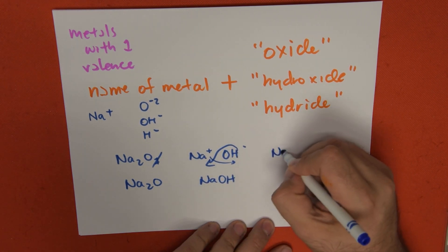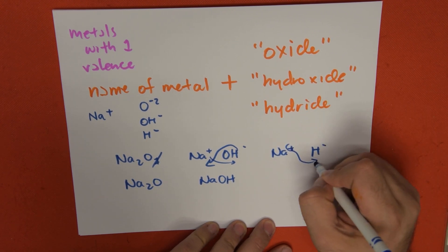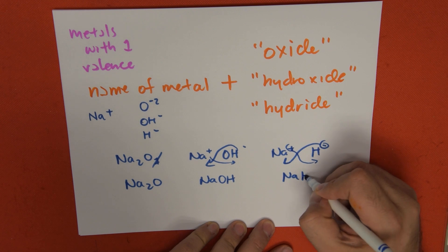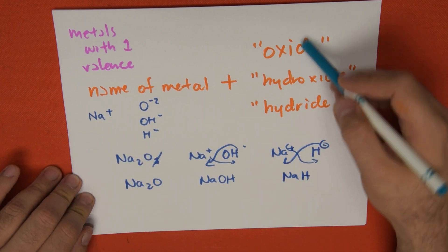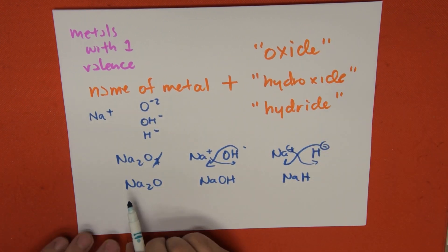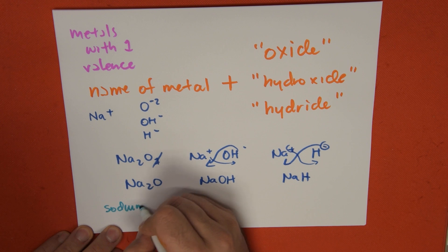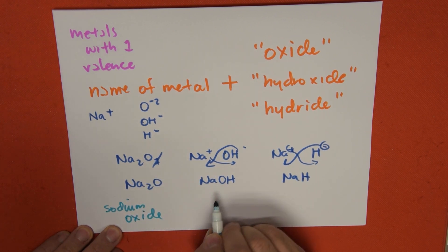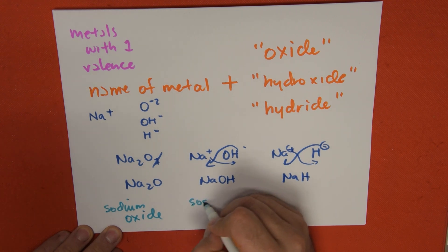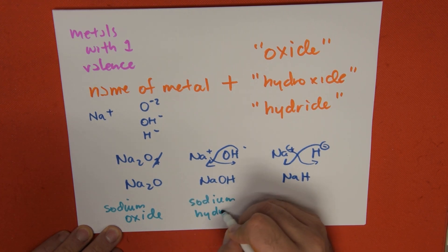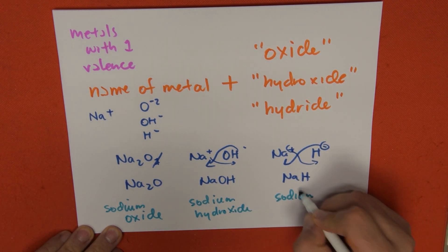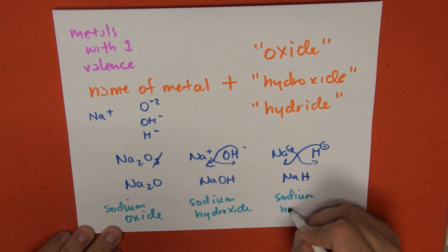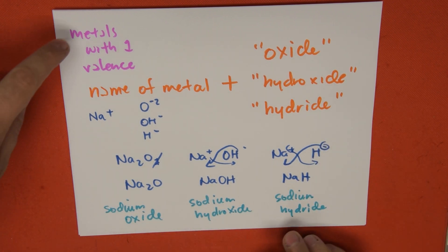And last, sodium plus 1 with hydrogen minus 1 — when we do the crisscross we get sodium hydride, NaH. The names are: sodium oxide, sodium hydroxide, and sodium hydride. This is for metals with only one valence, such as sodium. I invite you to watch the halide salt video, which goes very deep into this topic — we're just changing the name of the anion.